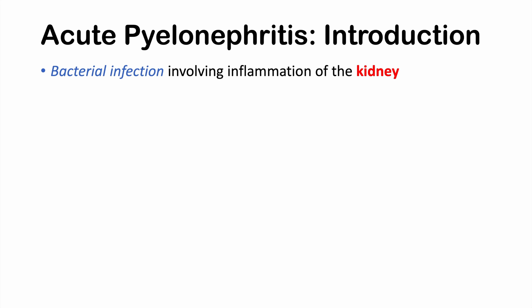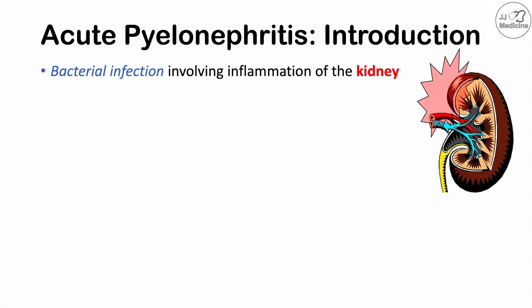So what is acute pyelonephritis? It is a bacterial infection involving inflammation of the kidney. We can see this in the word itself: itis means inflammation, the prefix nephro means kidney, and pyelo refers to the renal pelvis, which is this area of the kidney here.